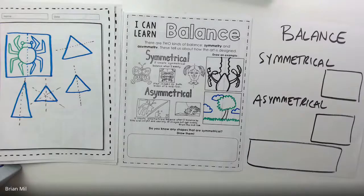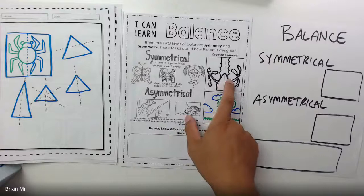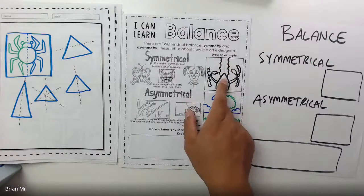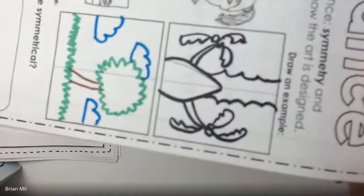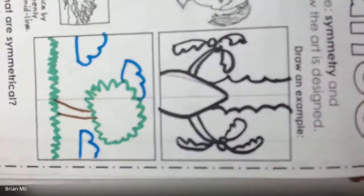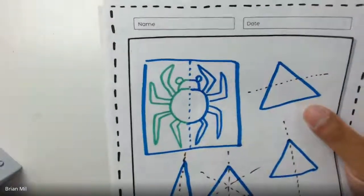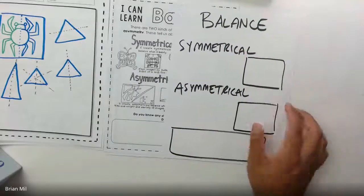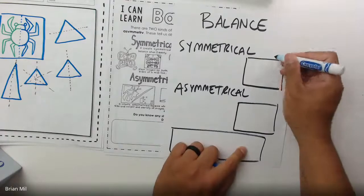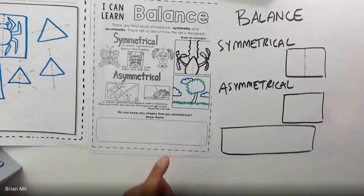Symmetry can also be seen in a reflection of water or someone's face. Now you have a blank square with a dividing line in the middle. What I did was turn my paper sideways and made an island reflecting on a river. You guys can do whatever you want — I've seen people do bugs. In that blank square, I want you to make something symmetrical.